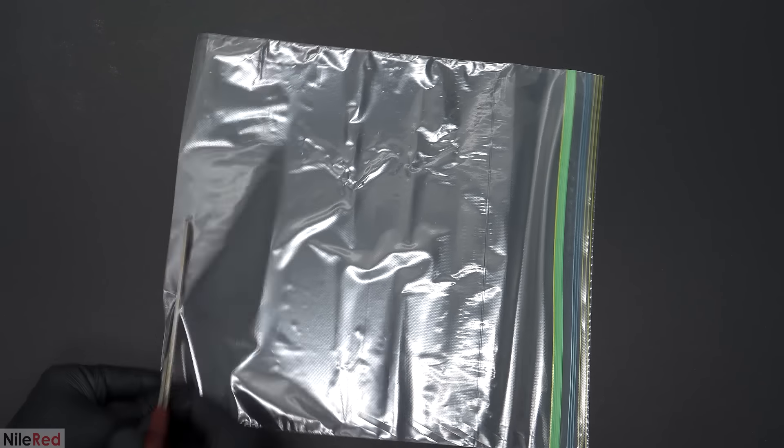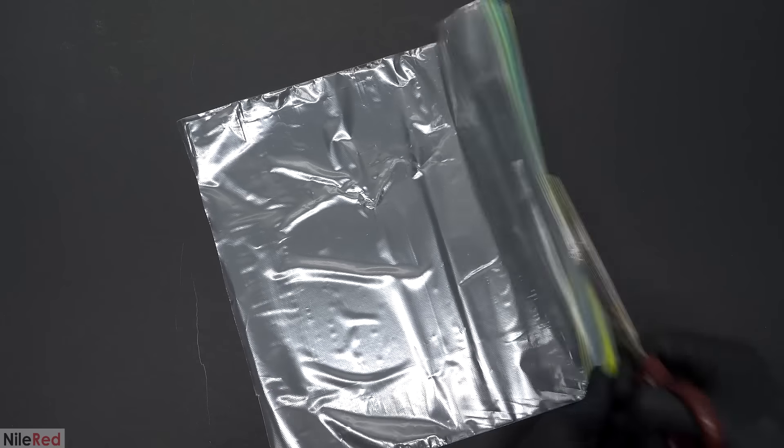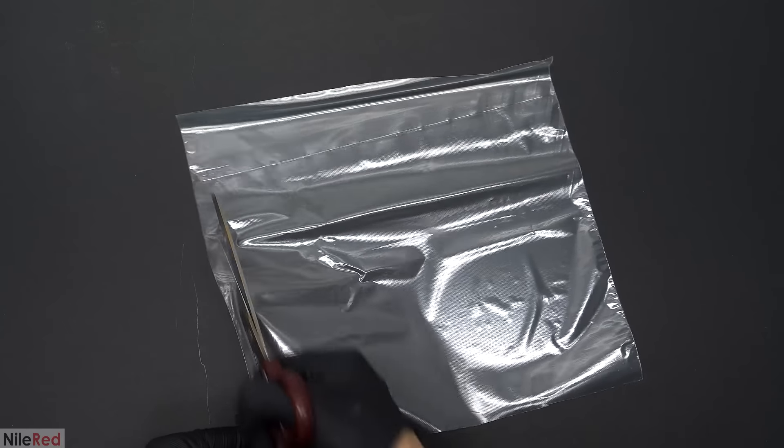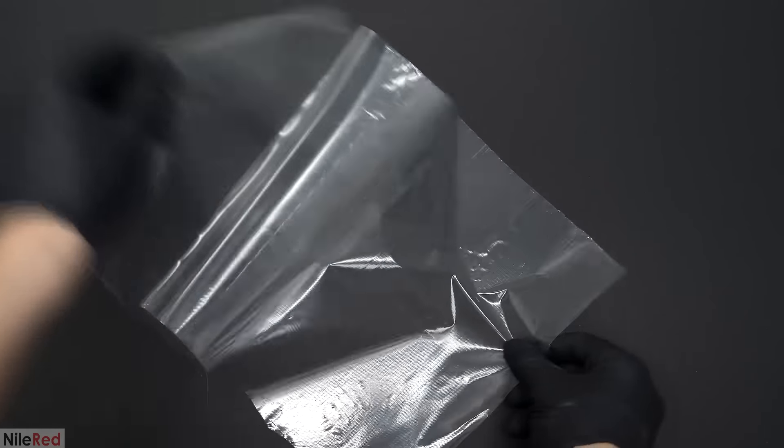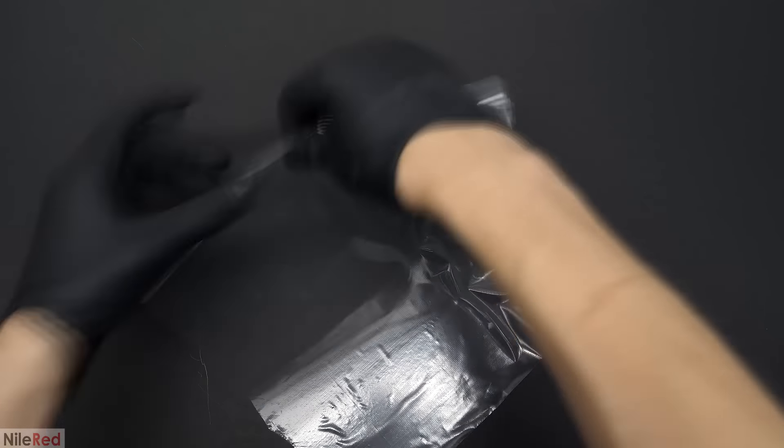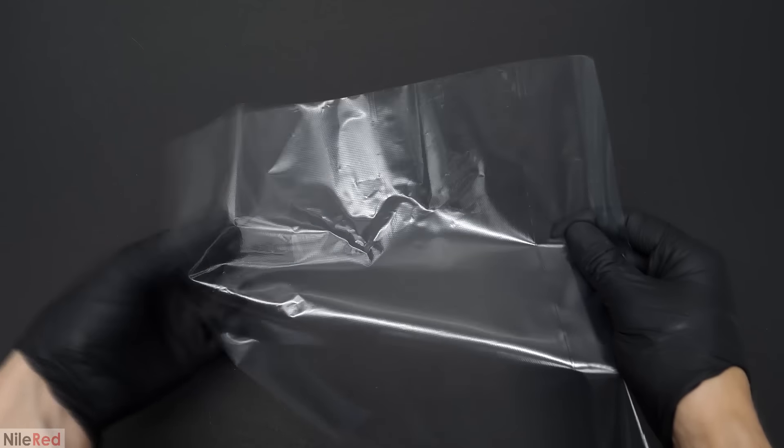While I waited for it to dry, I moved on to making a template. To do this, I just needed a thin sheet of transparent plastic. And the only thing I had around the lab was a plastic bag. It was far from ideal, but it was more than fine to just test things out. Using scissors, I cut off the edges and I separated it into two sheets.